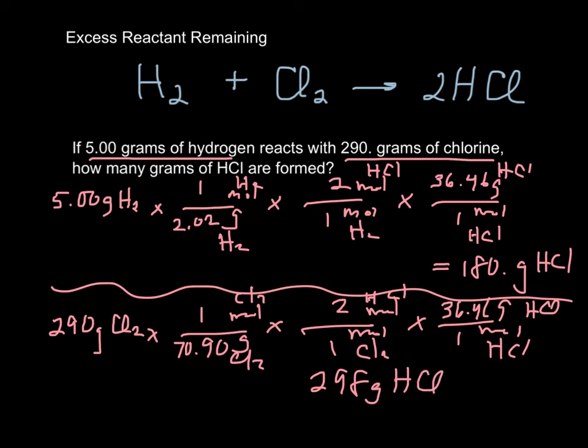You have to decide, this is the smaller number, so this is the amount that we're actually going to make. That's the answer to our question. This is not correct, because this was our limiting reactant.